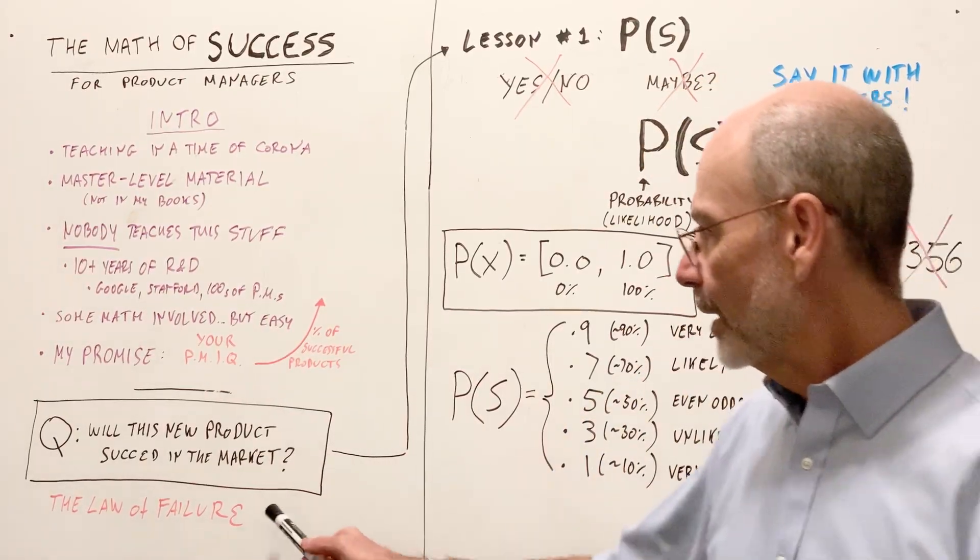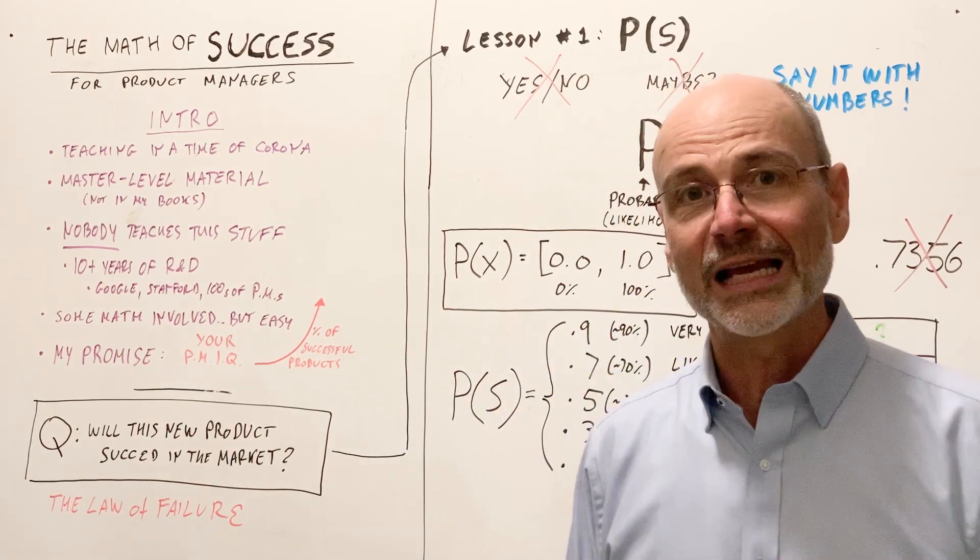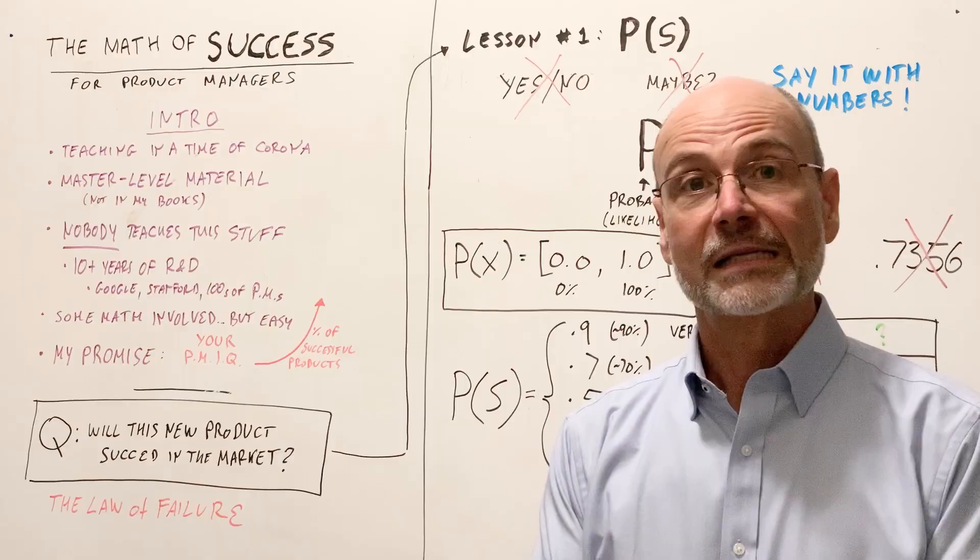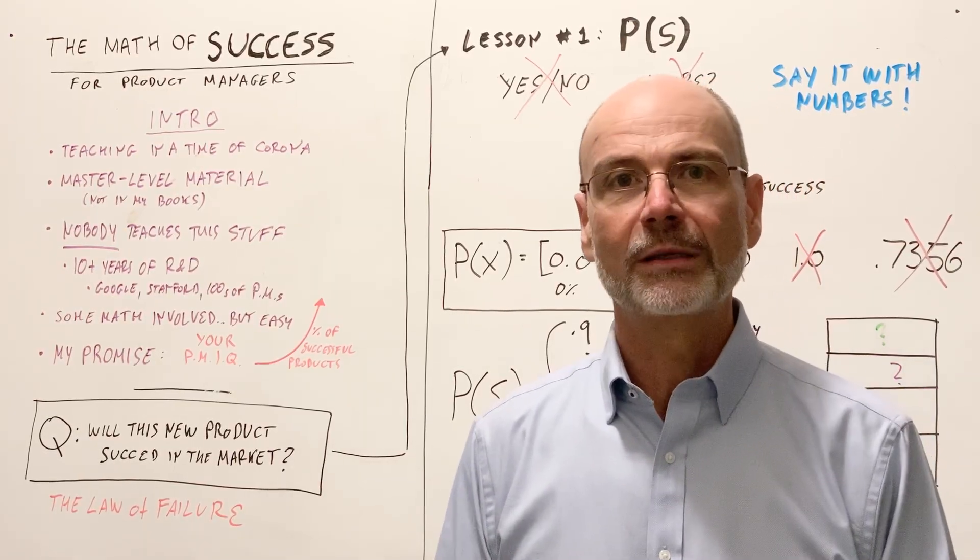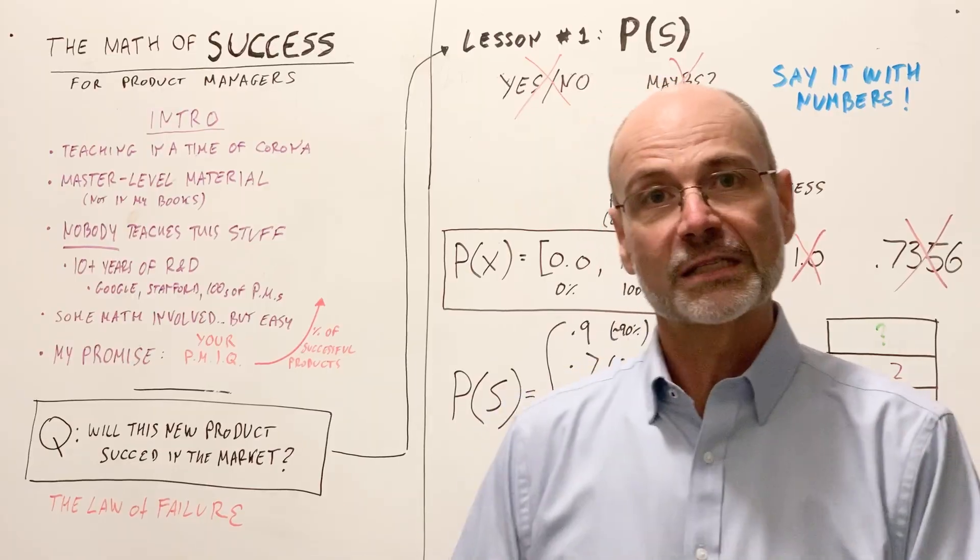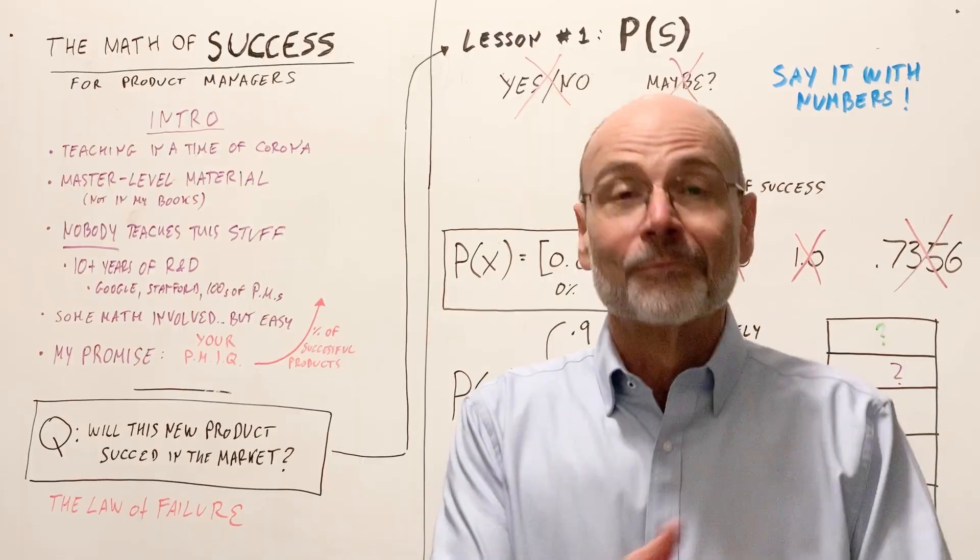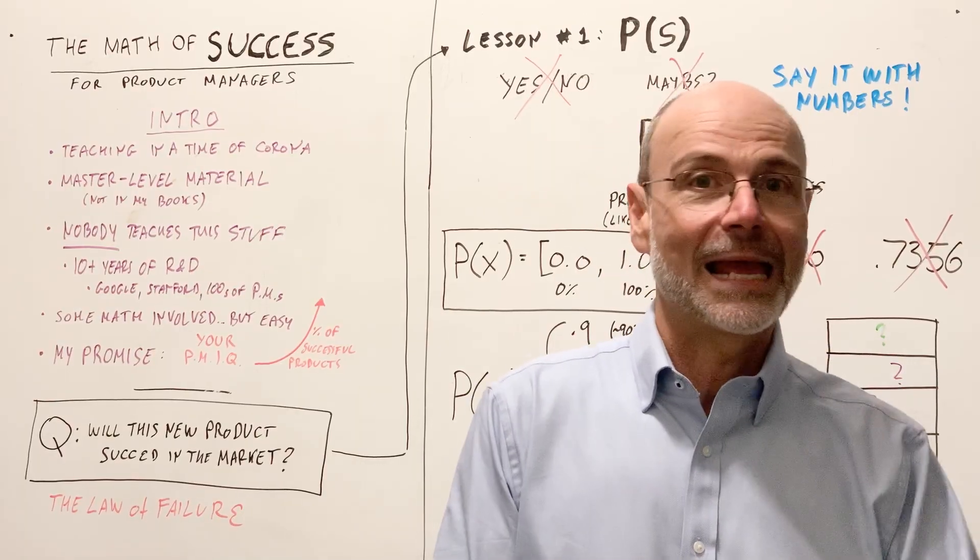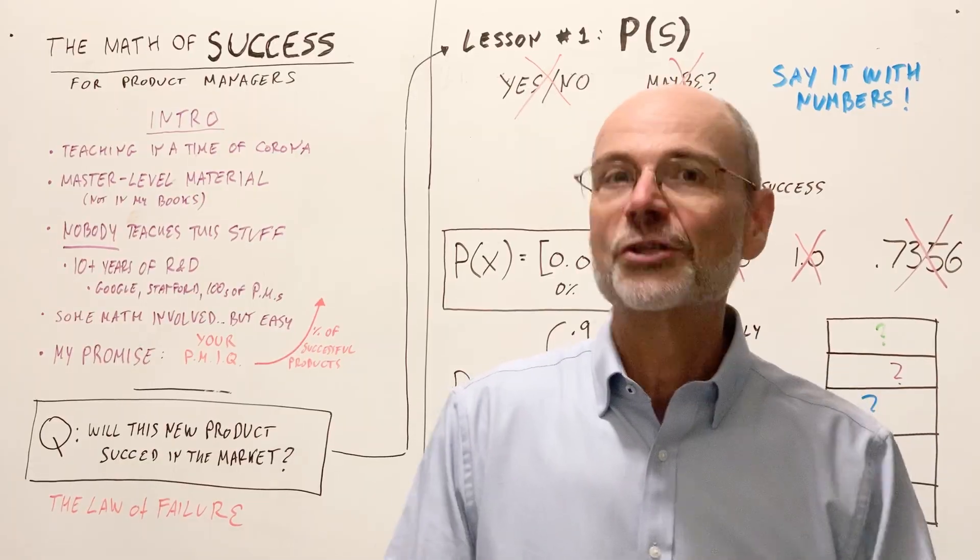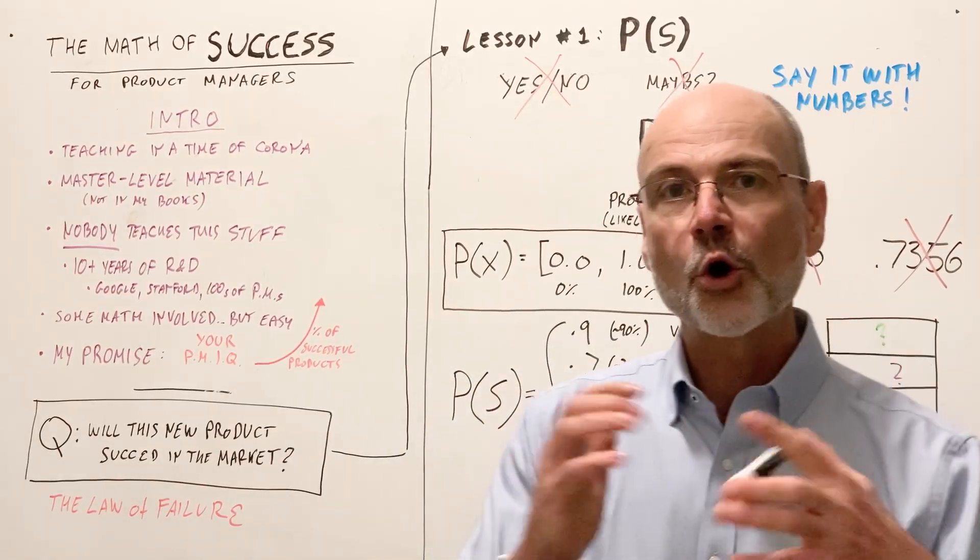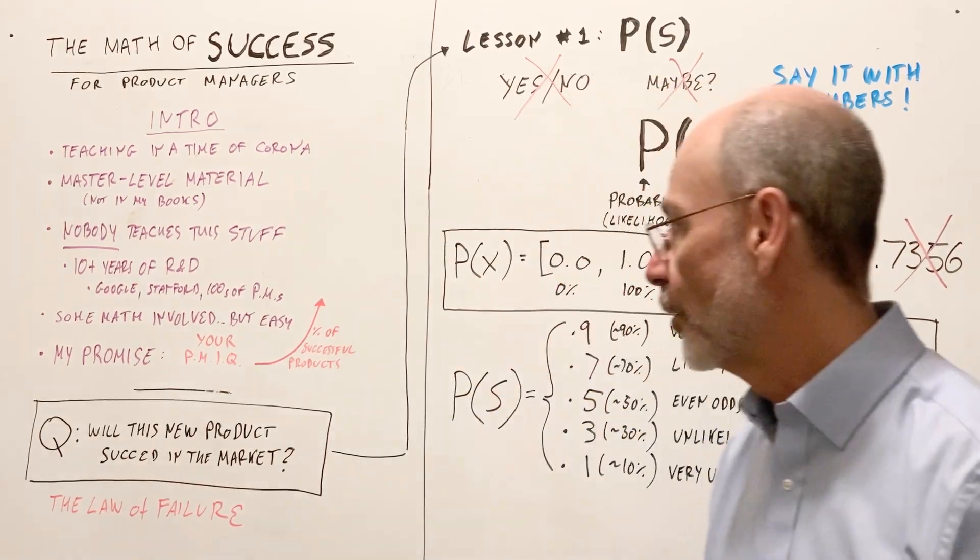And why is this important? Well, because of the law of failure. So if you've read my book or watched my other videos and lectures, you know that the law of failure states that most new ideas, most new products will fail in the market, even if competently executed. So that's usually 80 to 90 percent or even more of new products launched in the market will fail, even if they're launched and planned and executed by very professional, very competent product managers, engineers, marketers, so on and so forth. So my goal is to beat the law of market failure and to help you beat the law of market failure.